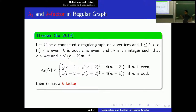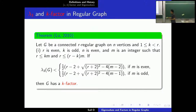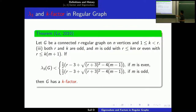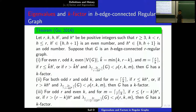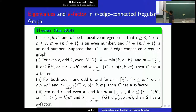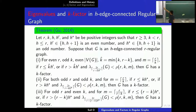This extends the result of Bollobás, Saito, and Wormald. Depending on the parity of R and K, we have slightly different situations. Gu extended the result of Lu by considering H edge-connectedness. This implies the result of Lu.